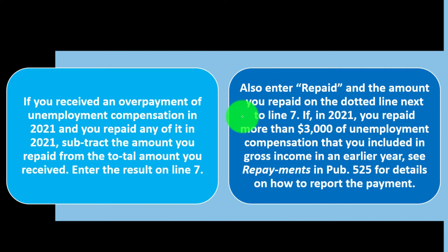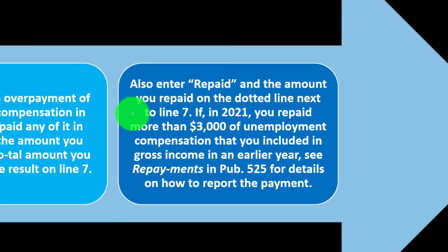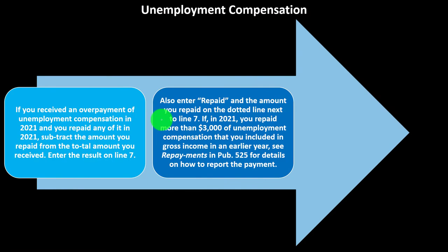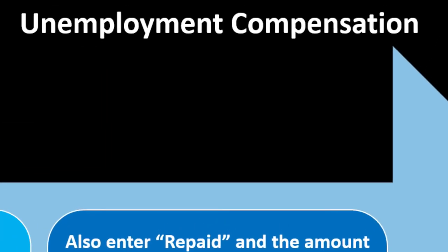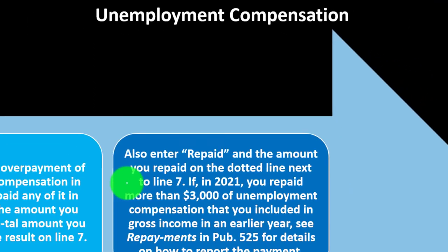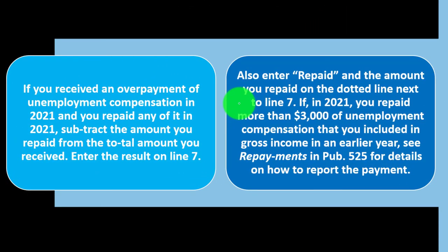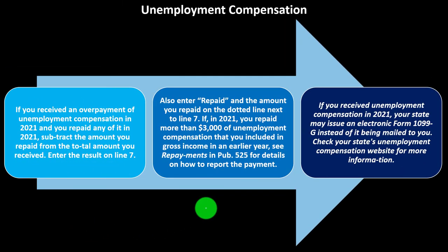Any kind of thing that throws the IRS off and requires a human being to look at it is likely to delay the refund — they're way backed up with all the coronavirus stuff. They've got a whole backlog of tax returns, so you want it as smoothly processed as possible if you're looking for the refund as fast as possible. If in 2021 you repaid more than $3,000 of unemployment compensation that you included in gross income in an earlier year, see Repayments in Publication 525 for details. If you received unemployment compensation in 2021, your state may issue an electronic Form 1099-G instead of mailing it — check your state's unemployment compensation website for more information.